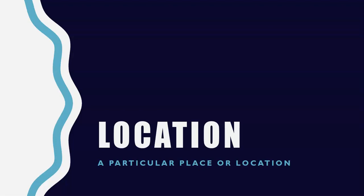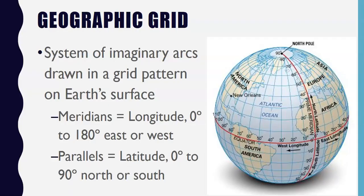The first section of this unit is location, which is simply defined as a particular place or position. Geographers determine a place's location through mainly a geographic grid on the earth, which is a system of imaginary arcs drawn in a grid pattern on earth's surface.